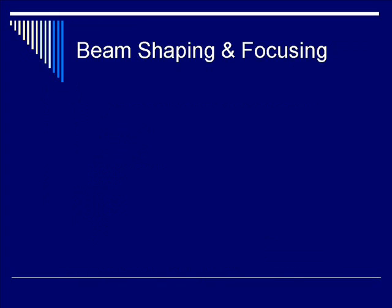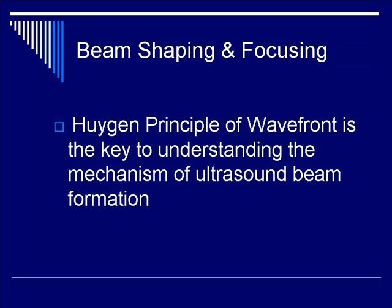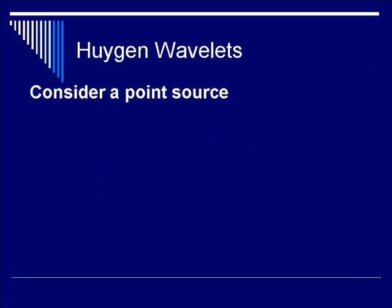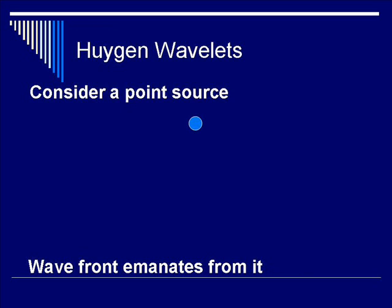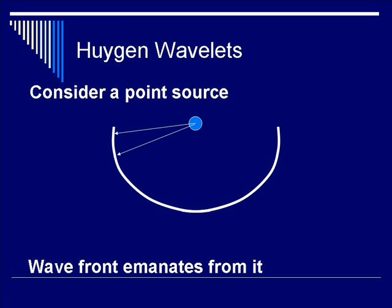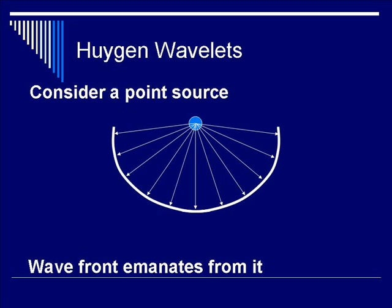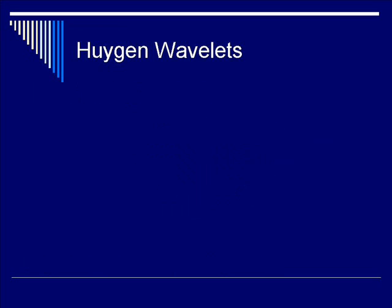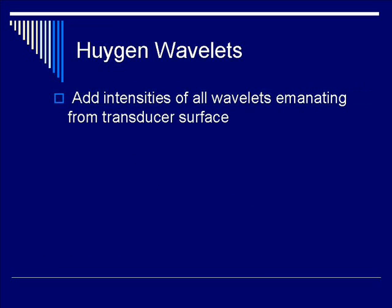We will now discuss ultrasound beam shaping and focusing. It is entirely dependent upon the application of the Huygens principle of wavelet formation and incorporation. Consider an ultrasound point source, denoted by the blue dot. A wavefront will be generated from this point source as it traverses towards the body tissue. The white line denotes the wavefront, which serves as the termination point of the various vectors emanating from the ultrasound point source. It expands with time as it traverses spatially. Ultimately, these Huygens wavelets can be added together to form the resulting wavefront of the transducer output.